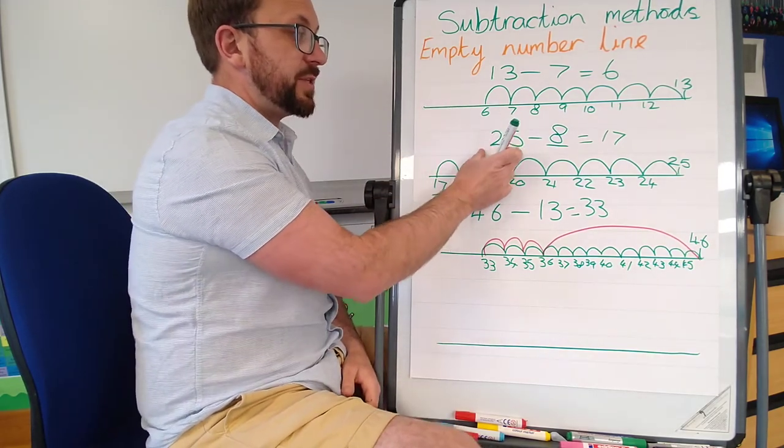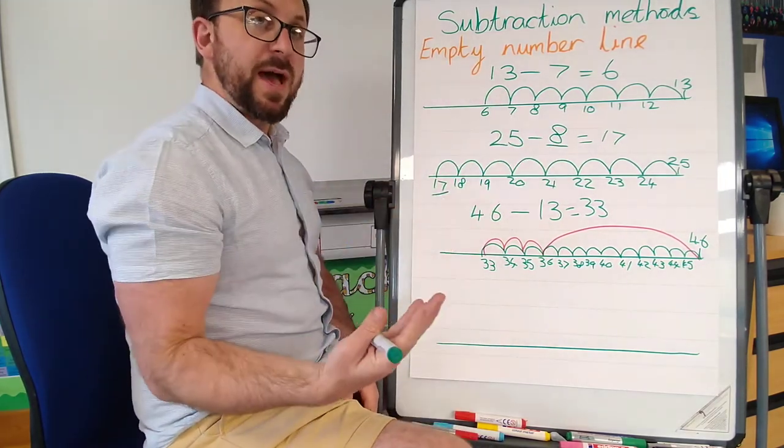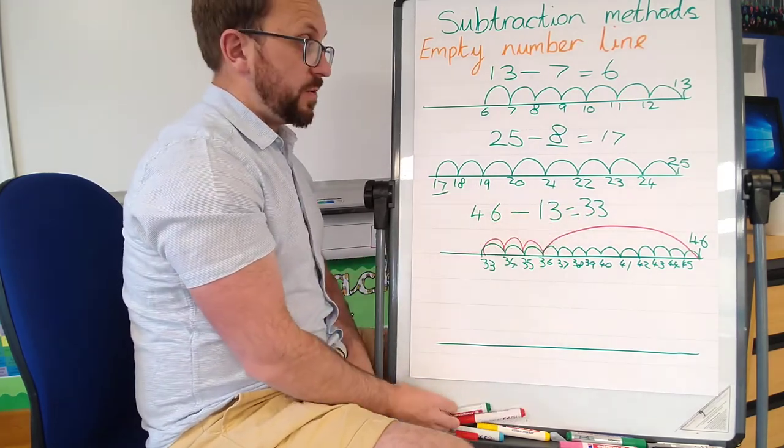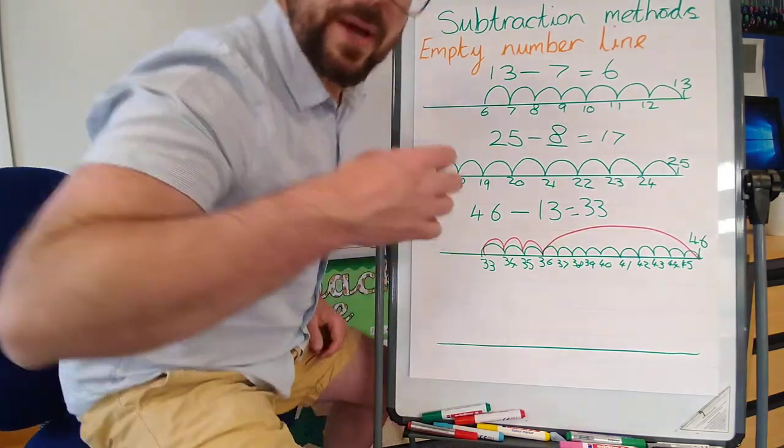So why don't you write some numbers for your child to have a try at? Let's start with two digits taking away one, and then when they're happy with that, move them on to two digits taking away two digits. Hopefully you do well with that. Good luck, off you go, bye bye.